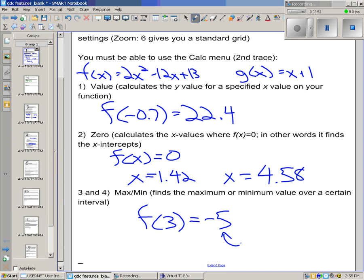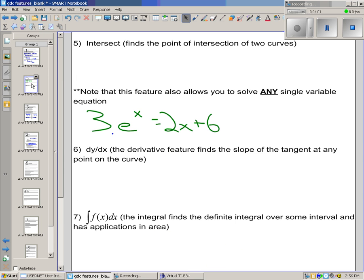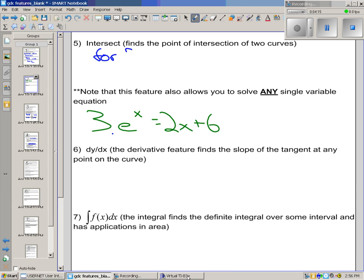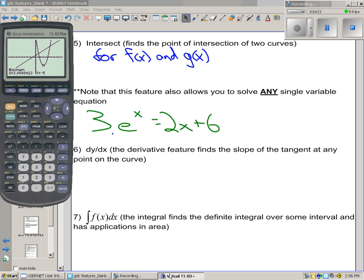This is our min, is negative 5. Okay? You could do the same for a max if it existed. Now, intersect is probably the single most important function to know how to use. So we can find the points of intersection between two curves. If we want to find out where f at x from our last slide and g at x intersect.